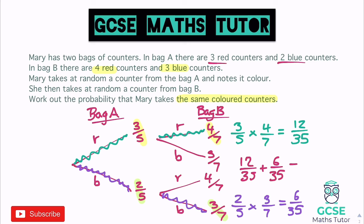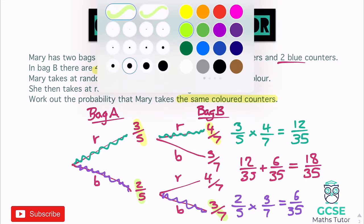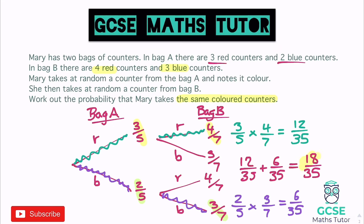12 plus 6 is 18, out of 35 — remembering not to add the denominators together. So 18/35 is our final answer for the probability of getting the same colors. For a simpler version, if asked just for two blues, we'd have gone along that route and got 6/35.